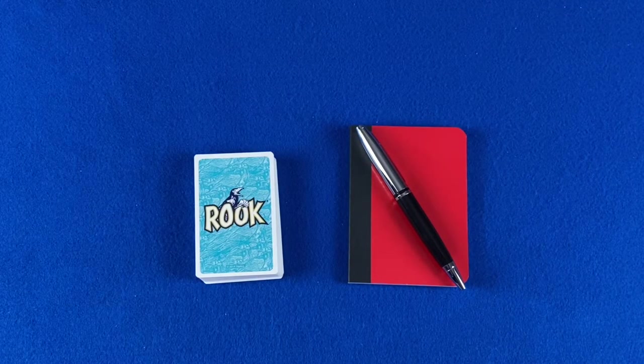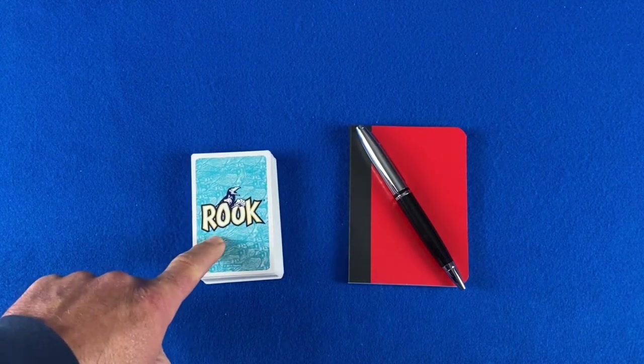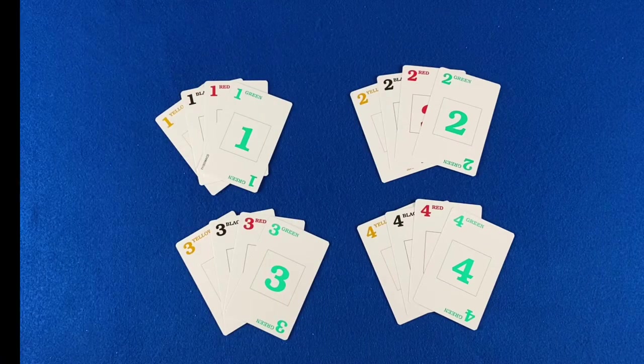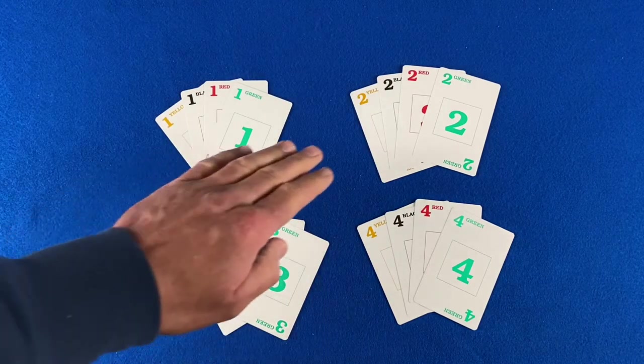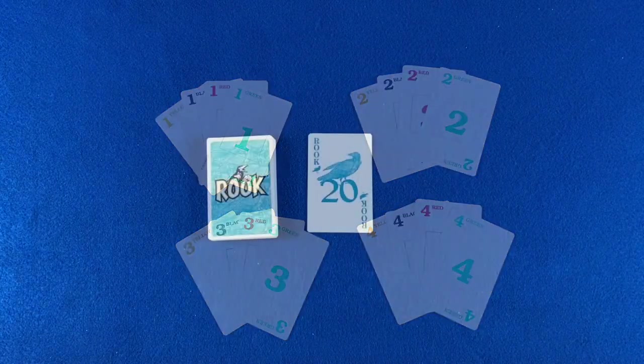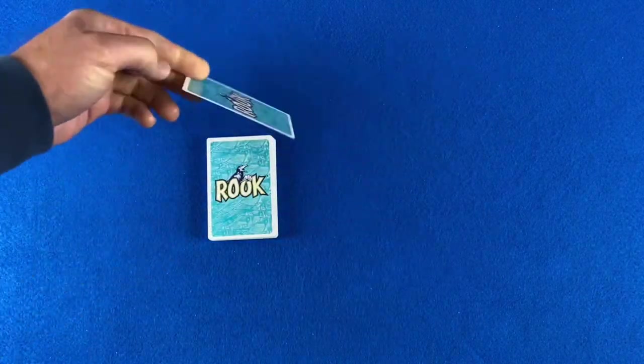To play Kentucky Discard, you will need a 57 card Rook deck and a way to keep score. Remove the 1s, 2s, 3s, and 4s from the deck. Include the Rook card to make a 41 card deck.